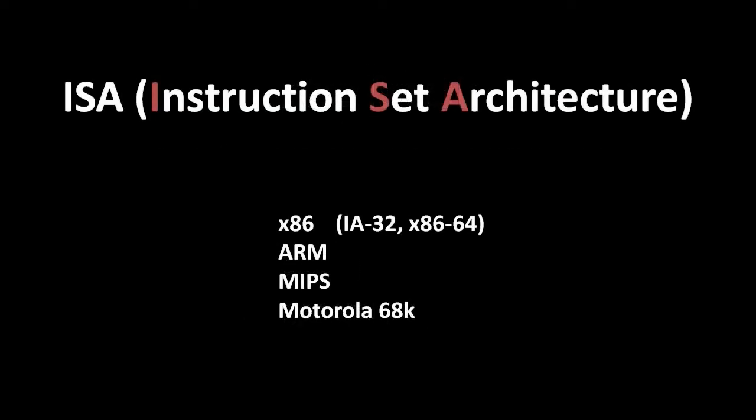A CPU's programming model primarily consists of its instruction set — the precise set of instructions which the CPU is hardwired to understand — and its set of registers, their number, their sizes, and their purposes. Together, these two facets of a CPU are often called its ISA, its instruction set architecture.